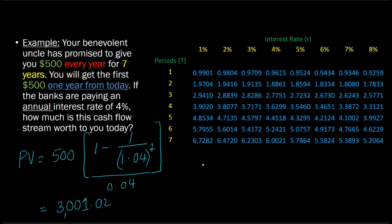Another way of doing it would be to look at the interest rate, which is 4%, and the number of years, which is 7. Take this expression—this is how much a $1 annuity would be worth today if you were receiving $1 every year for the next 7 years and the interest rate was 4%.